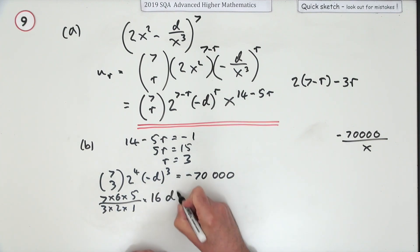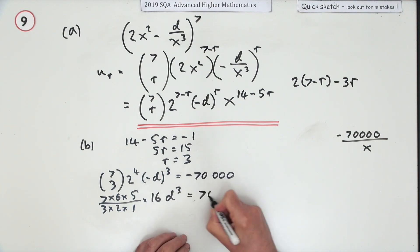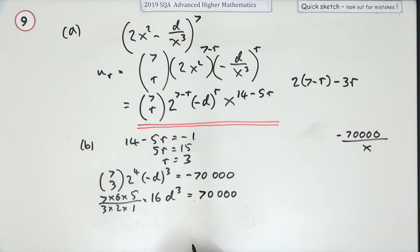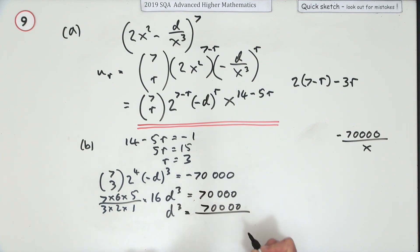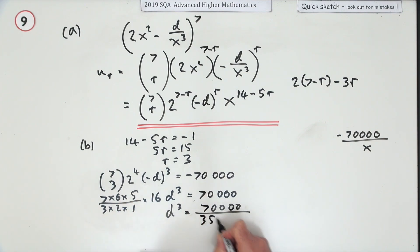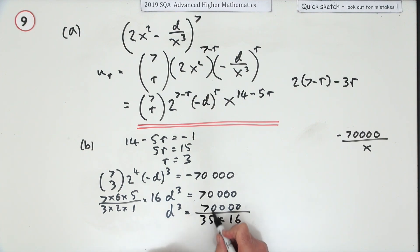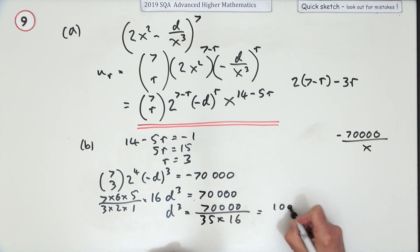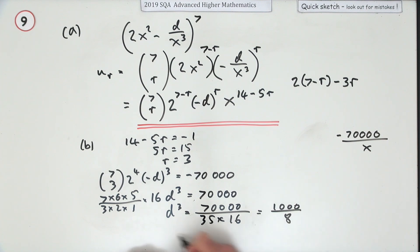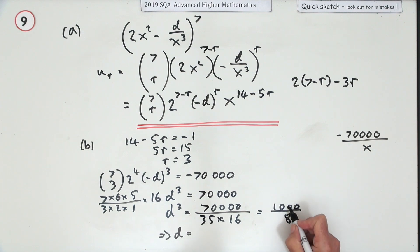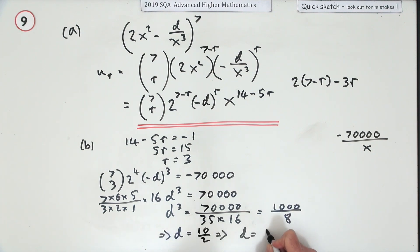The negatives cancel out, leaving d cubed times 35 times 16 equals 70,000. So d cubed equals 70,000 divided by 560. The 35 and the 16 give 560 — simplifying: 70,000 over 560 equals 1000 over 8. Those are both perfect cubes, so d equals the cube root of 1000 over the cube root of 8, which is 10 over 2. Therefore d equals 5.